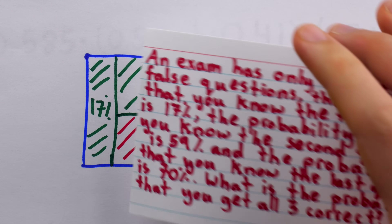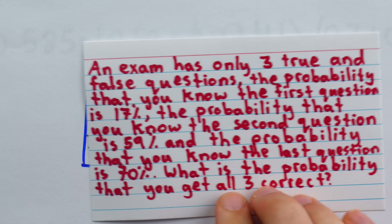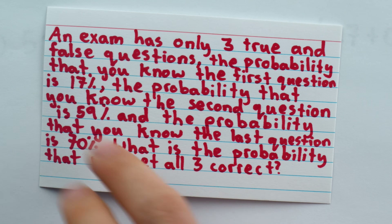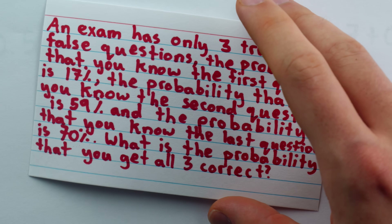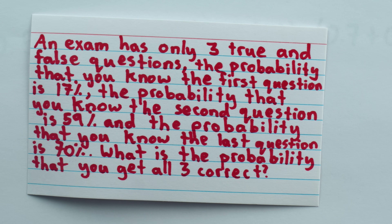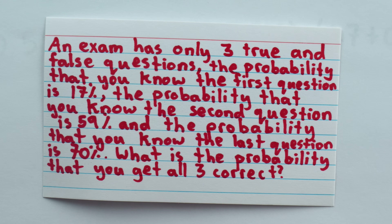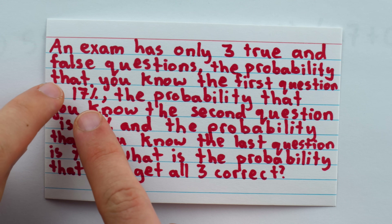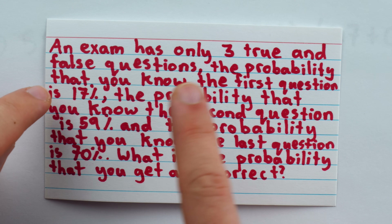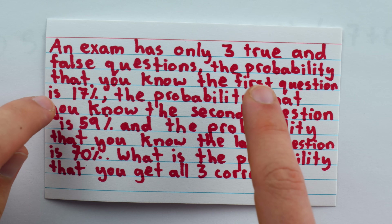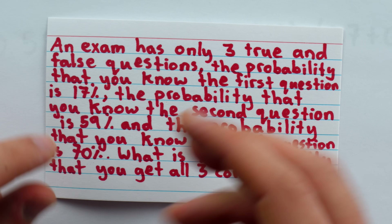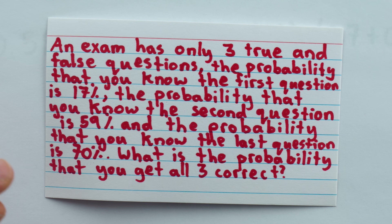So which solution do you think is better? There's certainly a lot we could say about this problem. Many people on the original Reddit thread had conflicting opinions or just really thought it was a terrible question. The thought of having a 17% chance of knowing a true or false question just feels a little strange — it almost feels like an AI-written question.